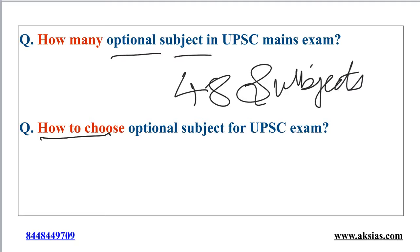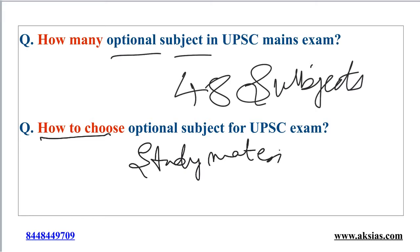The candidate should choose the optional subject based on various parameters like the syllabus notified by UPSC, the study material, coaching accessibility, the scoring pattern, and the popularity of the subject. Apart from these, it is the interest of the candidate in the subject which matters the most for securing a good ranking and good marks in the examination.